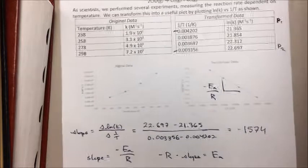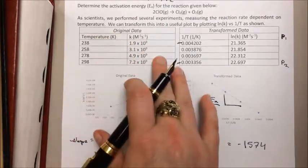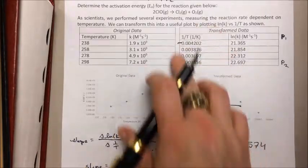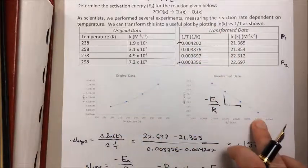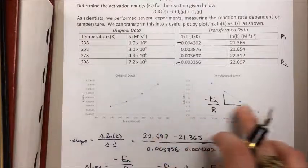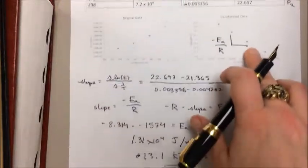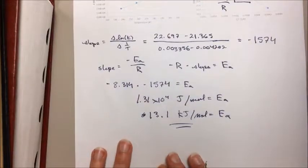So that's it. If you have temperature versus rate data, just plot 1 over T as your horizontal axis, natural log of the K as your vertical, take the slope of the line, and solve for your activation energy.